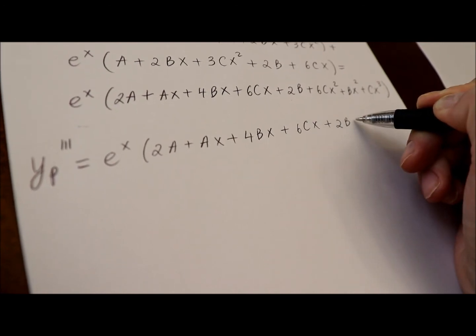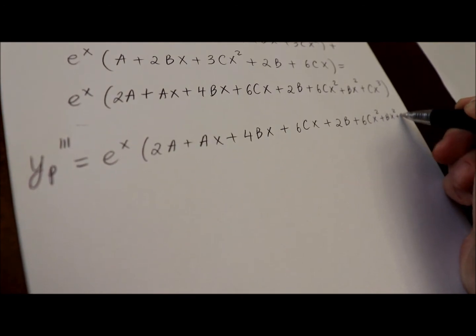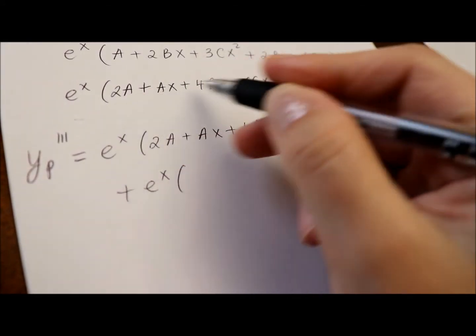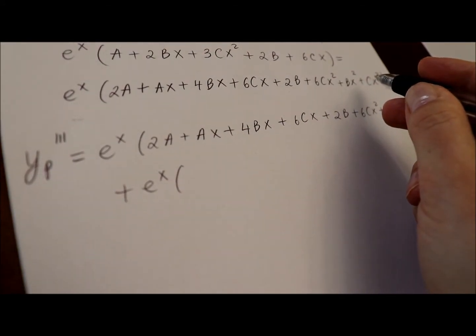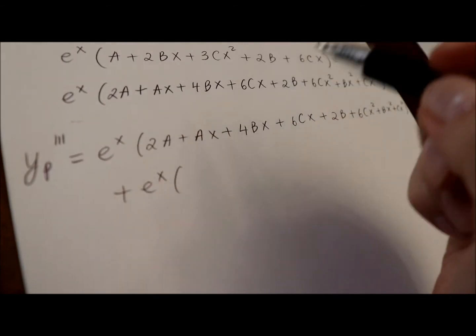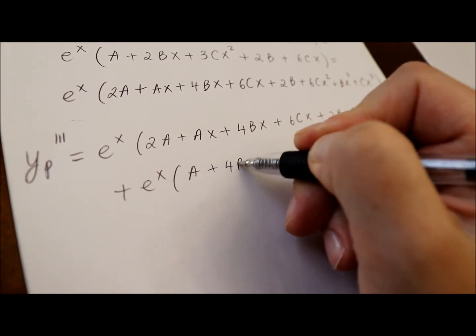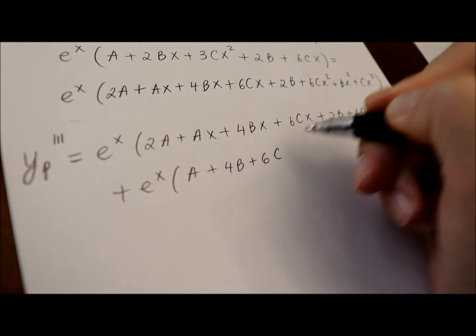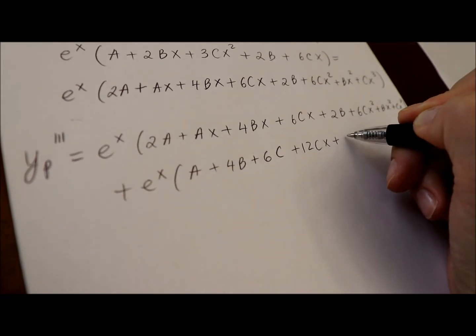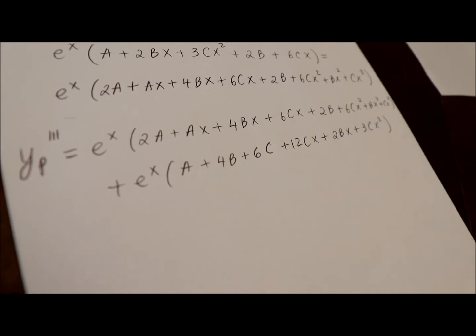everything else will be wrong. Plus e to the x, derivative of all that, don't forget, it will be with respect to x, which means derivative of 2a and derivative of 2b will be zeros.